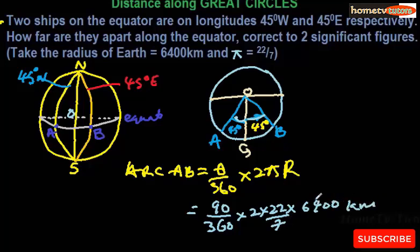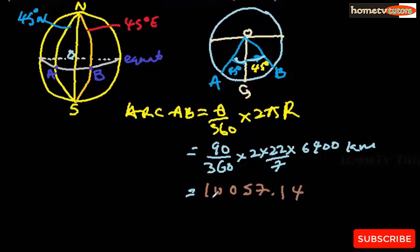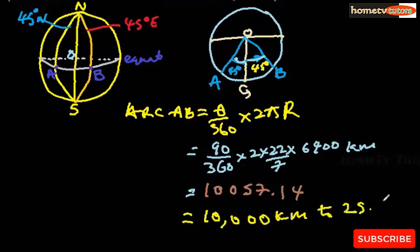By calculation we arrive at 10,057.14. We were asked to round off to two significant figures, so the answer is approximately 10,000 kilometers to two significant figures.